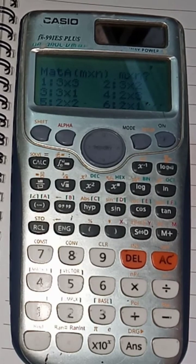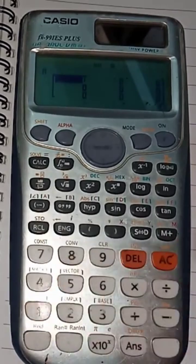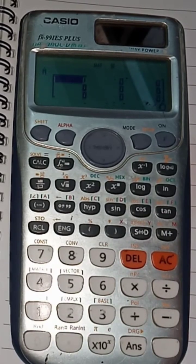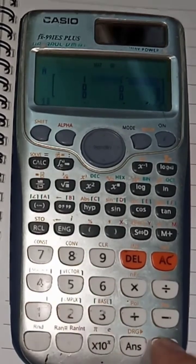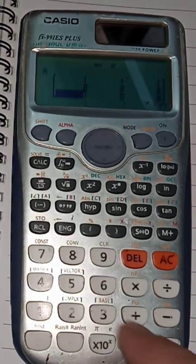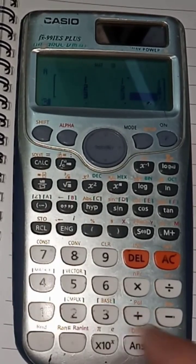As my matrix is 3 by 3, I will press 1. Now you just need to plug in the elements or entries of this matrix that are 1, 1, 1, 2, 2, 2, and then 3, 3, 3.